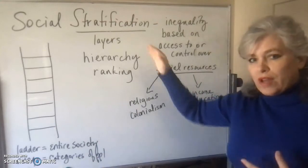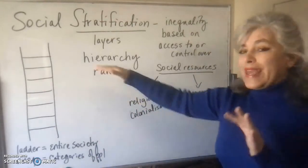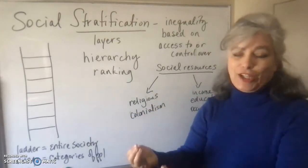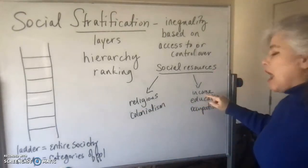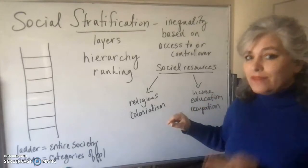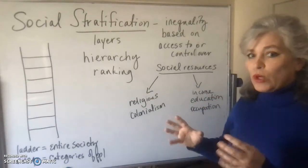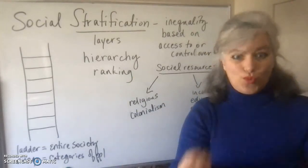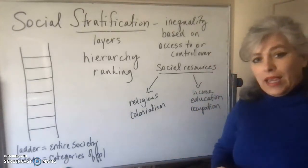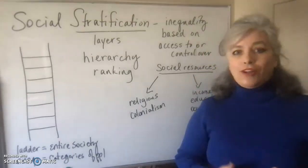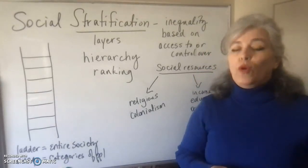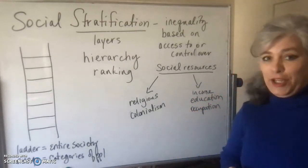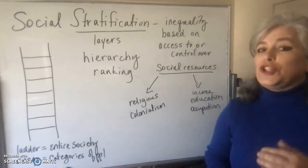In the case of social stratification in the United States, we categorize people on different rungs of this metaphorical ladder using three achieved statuses. We're going to look at those three and combine them to figure out a person's rank in society. The three achieved statuses that sociologists use to look at rank within United States social structure are income, education, and occupation.